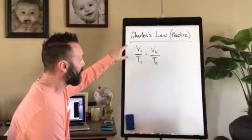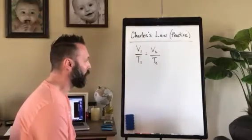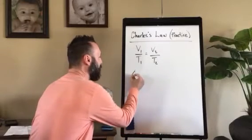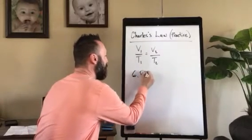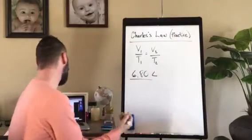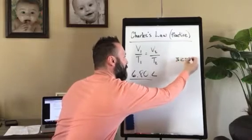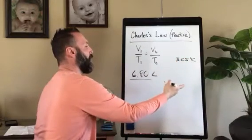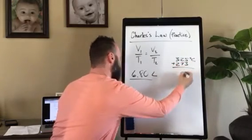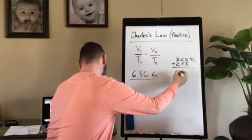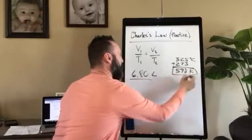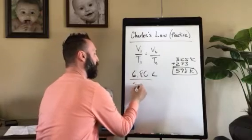So Charles's Law states V1 over T1 equals V2 over T2. Our volume of the first gas was 6.80 liters. Temperature of the first gas was 325 degrees Celsius, but reminder, we need to get these to Kelvin. So to get them to Kelvin, we're going to add 273. That gives us a temperature of 598 Kelvin, and that'll be our temperature of 1.